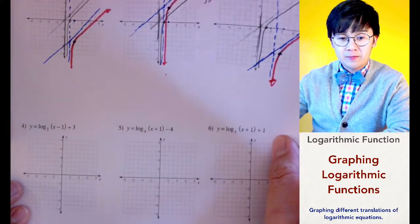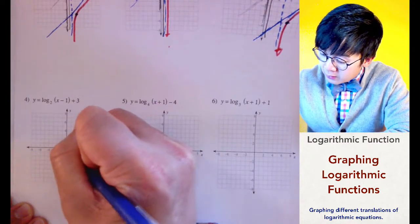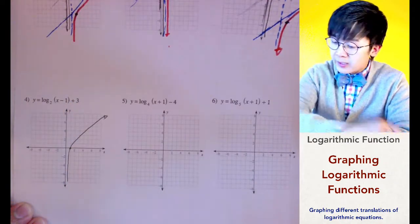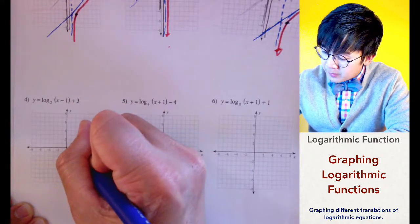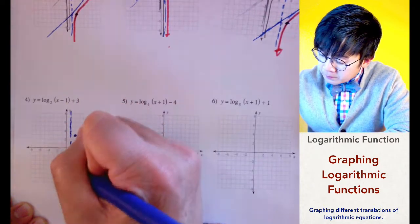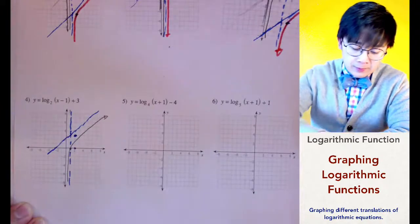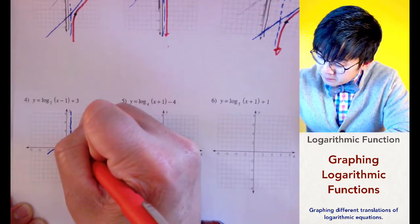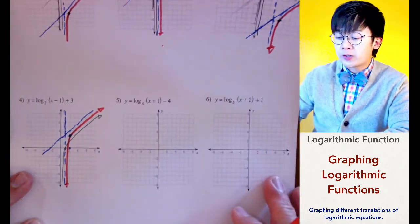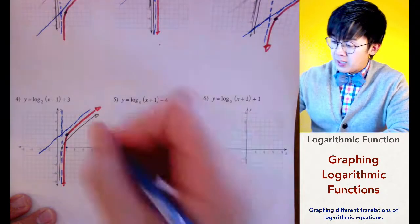For the next function, let's again graph log of x. The translation would be 1 to the right and 3 up. We establish the vertical asymptote and the slant asymptote and draw the graph of our function. Make sure you're not going to cross the asymptotes that you have drawn, so that you'll be able to sketch the graph of the logarithmic function accurately. Now for problem number 5.